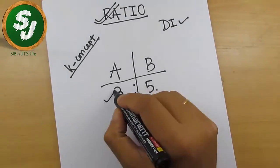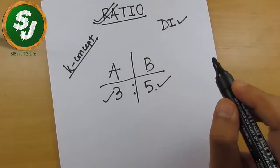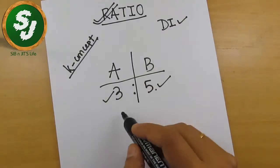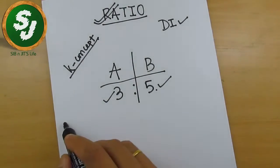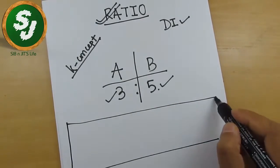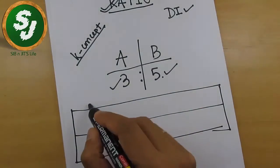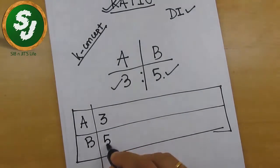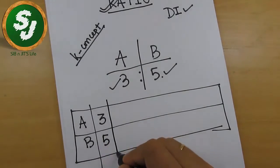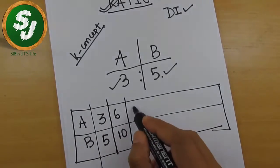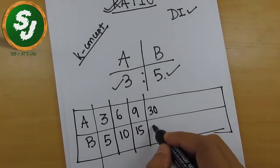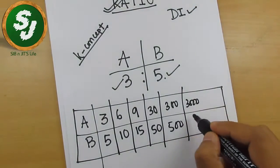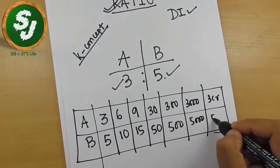It can be 3 rupees and B can have 5 rupees, that's okay. The given information is the ratio of money A and B have is 3 to 5. So it can be rupees 3 or 5. For example, let's draw this diagram: A and this is B. A can have 3 rupees and B can have 5 rupees, that's fine. Exactly 3 rupees, 5 rupees. Or it can have 6, 10. Or it can have 9, 15. Or it can have 30, 50. Or it can have 300, 500. Or it can have 3000, 5000. Or it can even have 3 crores and 5 crores.